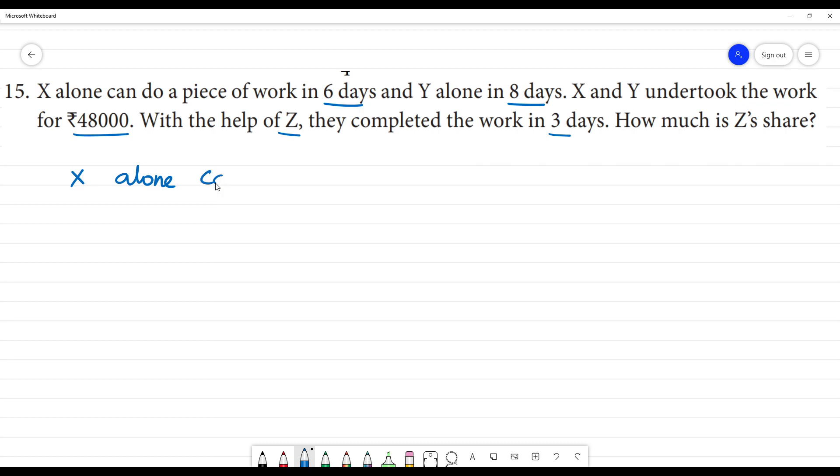X alone can do a piece of work in how many days? Six days. So X's one complete work, one day work is equal to 1/6 of the work.